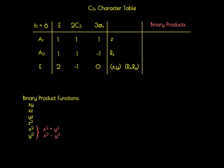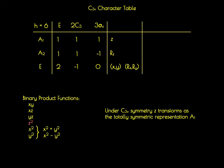We're going to start with the easiest function to describe, and that's the z² function. Looking up at the character table, we notice that under C3V symmetry, the z function transforms as a totally symmetric A1 representation. Squaring a totally symmetric function leads to a totally symmetric function. Therefore, the z² function also transforms as A1.